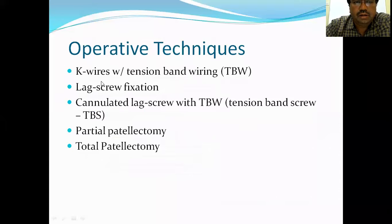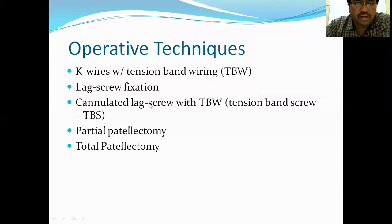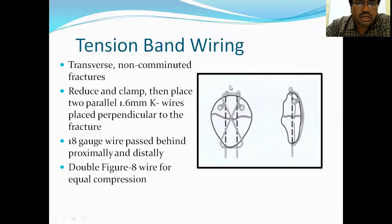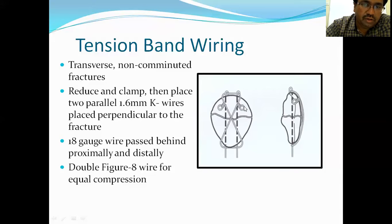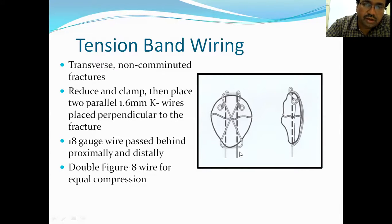Operative techniques: after reducing the fracture, we apply K-wires with tension band wiring. Other methods include cannulated lag screw fixation, cannulated lag screw with tension band wiring, and partial patellectomy. In tension band wiring, we reduce the fracture, pass two K-wires perpendicular to the fracture, and then pass a stainless steel wire in a figure-of-eight, tightening medially and laterally to compress the fragments.